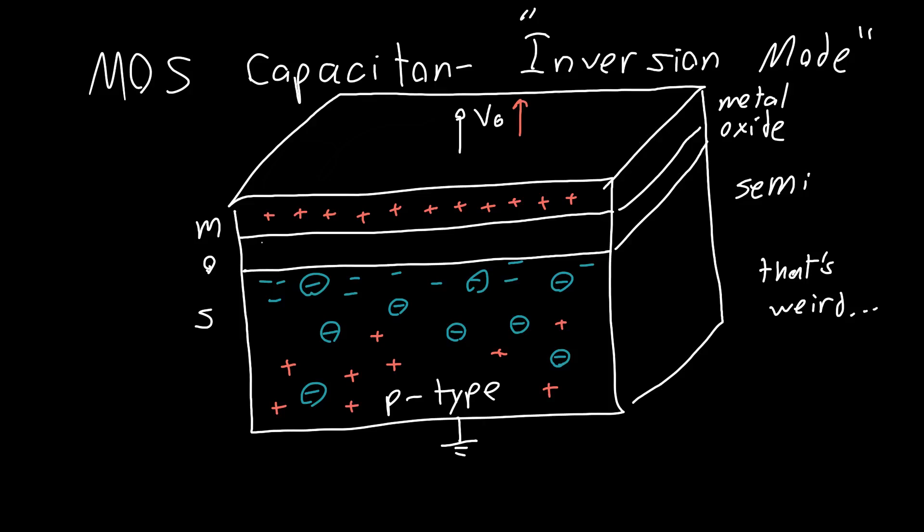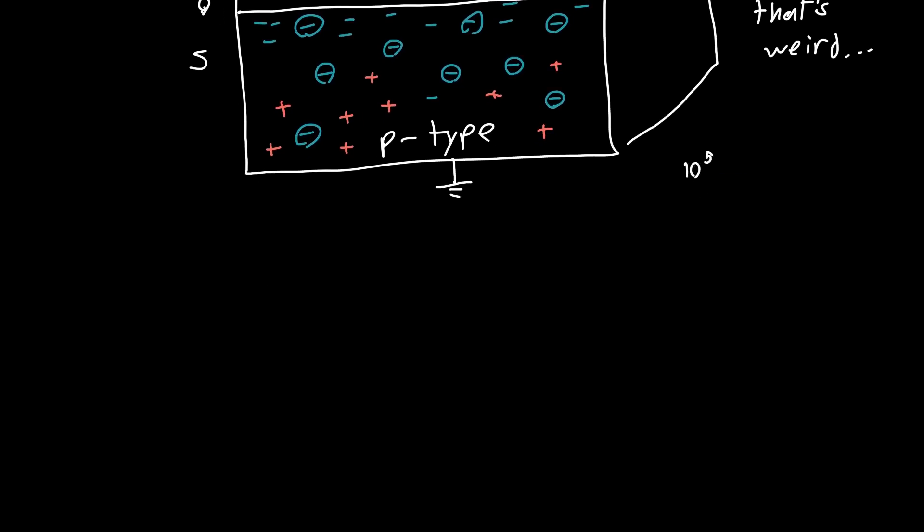Because we know that there's not that many electrons in this p-type semiconductor. If the doping is high there might only be like 10 to the 5 per cubic centimeter. So the fact that we can have this is really interesting and it's more easily understood if we look at the band diagram.